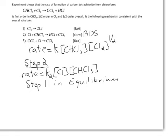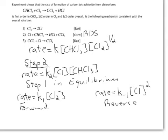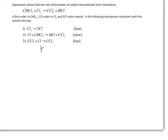Step one is going to be in equilibrium. So I'm going to write the rate law for the forward reaction: rate equals K1 times the concentration of Cl2. For the reverse reaction, rate is equal to K-1 times the concentration of Cl squared. If this first step has come into equilibrium, then I can set the rate law for the forward reaction equal to the rate law for the reverse reaction: K1 times the concentration of Cl2 is equal to K-1 times the concentration of Cl squared.